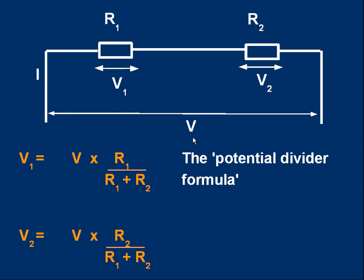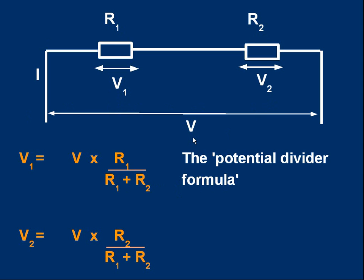There's a very useful way to work out what V1 or V2 is. It's called the potential divider formula.